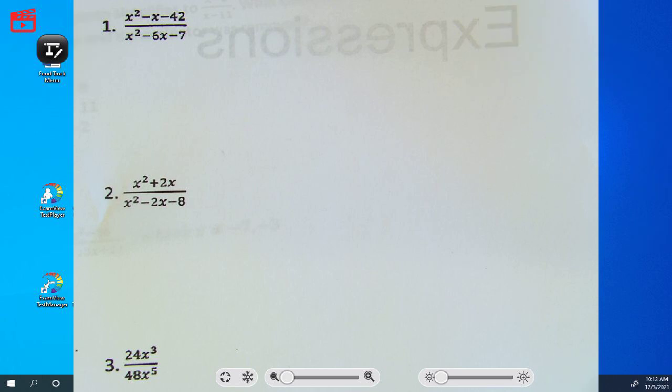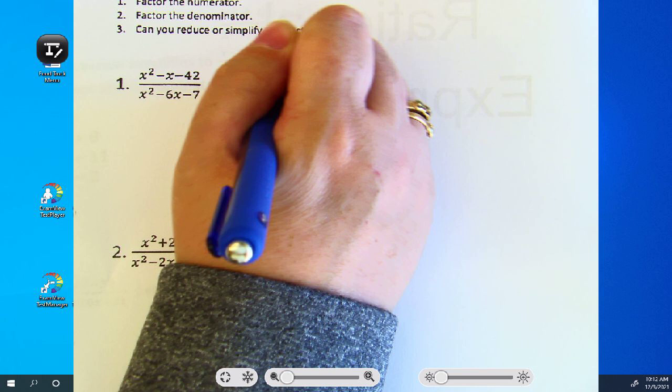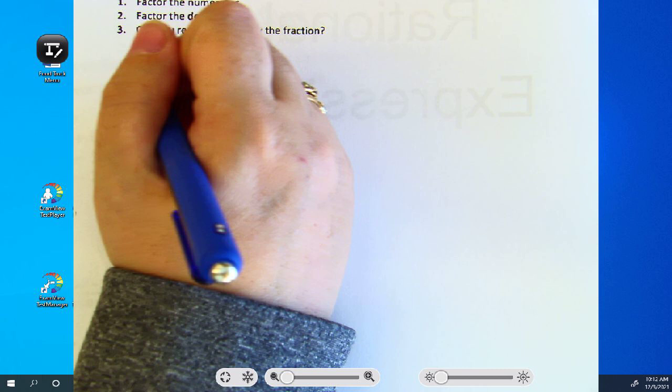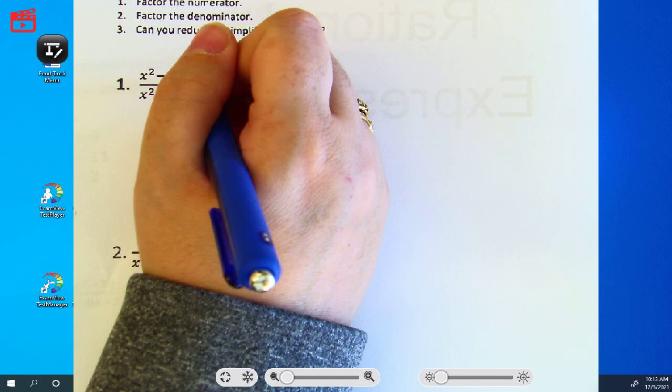All right, so you were asked to factor the numerator and the denominator. Is there a GCF here? No. Trinomial or binomial? Trinomial.